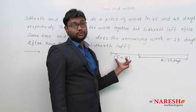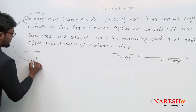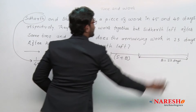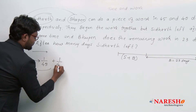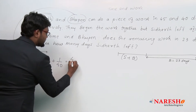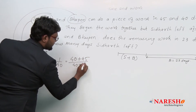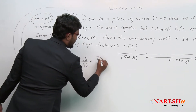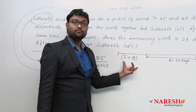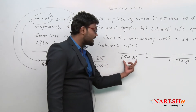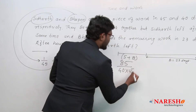Now, one day's work of Siddhartha is 1/45, since he can do the work in 45 days. One day's work of Bhupen is 1/40. So their combined one day's work is 1/45 + 1/40, which equals (40 + 45) / (40 × 45) = 85 / (40 × 45). Whenever Siddhartha and Bhupen were working together, their one day's work is 85/(40 × 45).